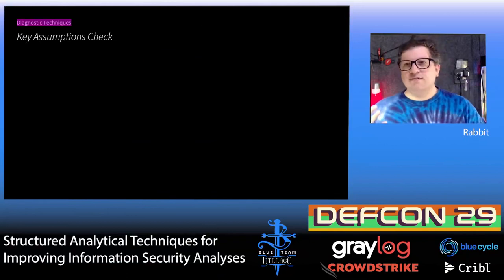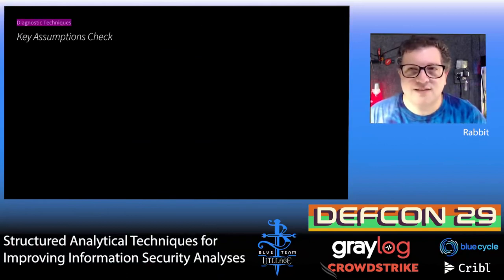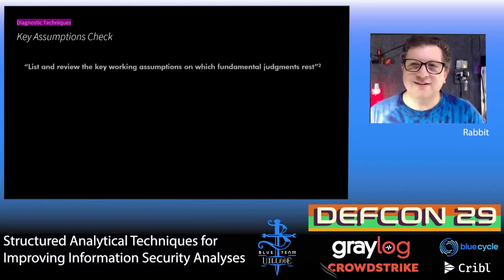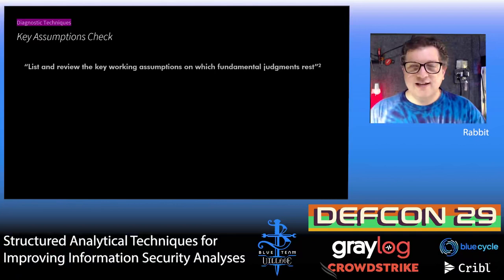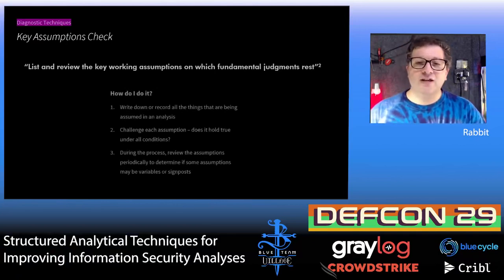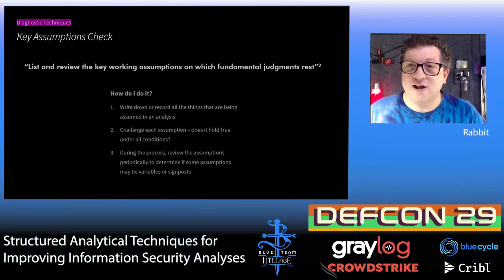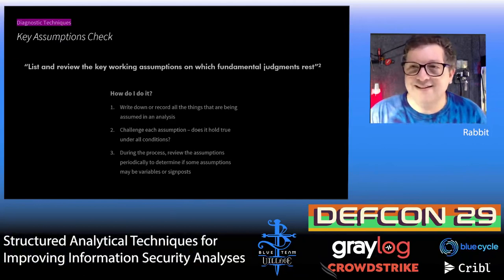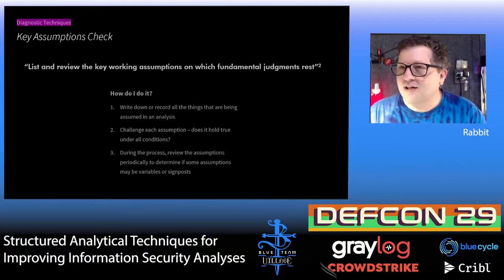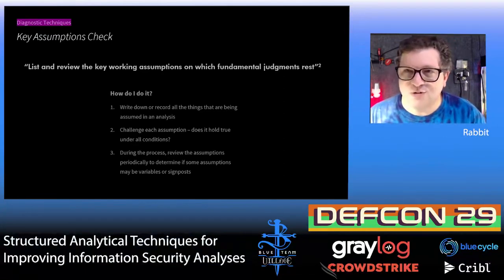The first structured analytical technique is called a key assumptions check — kind of an easy one to start with. It's literally thinking about all of the assumptions you made when coming to a conclusion or performing an analysis and writing them down — creating a list of things you've just assumed. You may review the assumptions periodically as you do the analysis to see if your opinion of them has changed, or maybe you discover you made an assumption you didn't think of as an assumption at the time, or maybe you need to do some rethinking about stuff you had assumed in the first place.